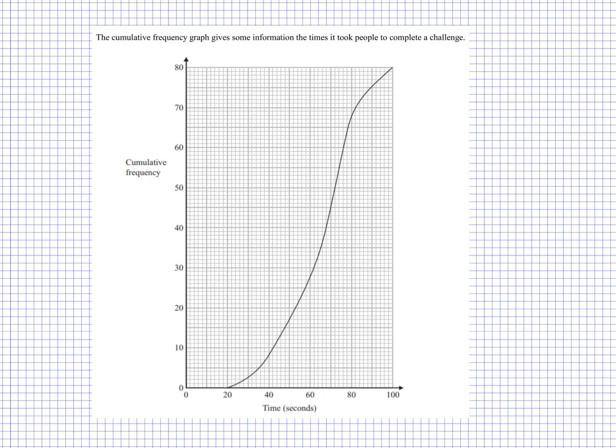The upper quartile and the lower quartile will be halfway between the median and the bottom point and halfway between the median and the top point. So that will be 60 for the upper quartile. So we go across and we read it here.